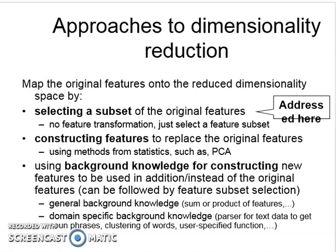These are the various approaches for dimensionality reduction. The first approach is to map the original features onto a reduced dimensionality space. The second is selecting a subset of the original features — given the full set of features, we select a subset, with no feature transformation; only the subset is selected.